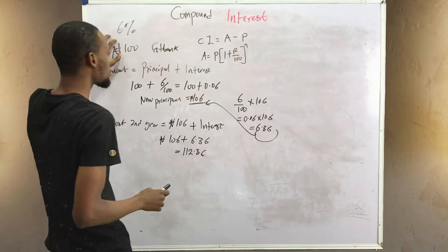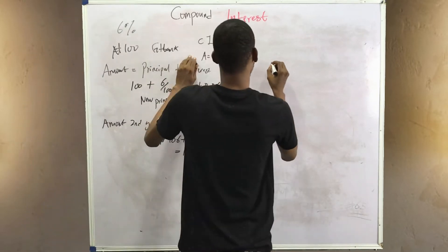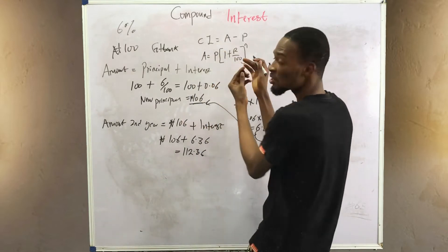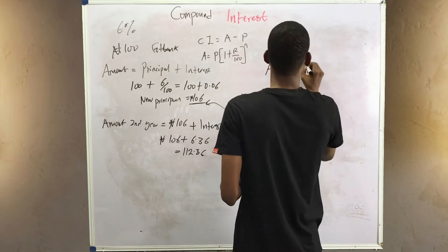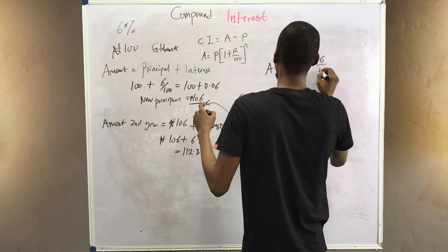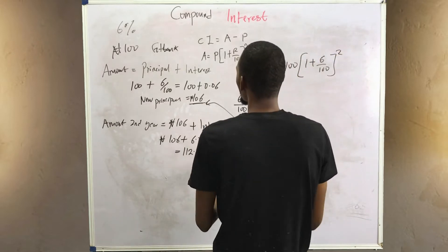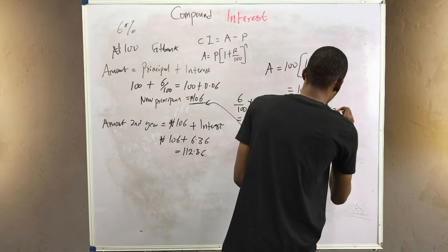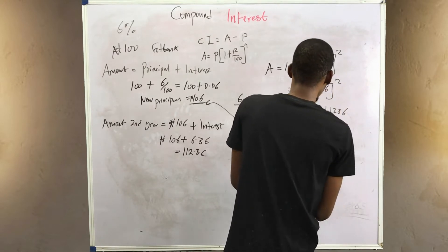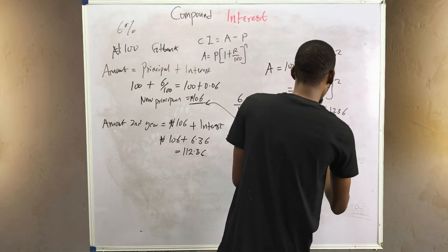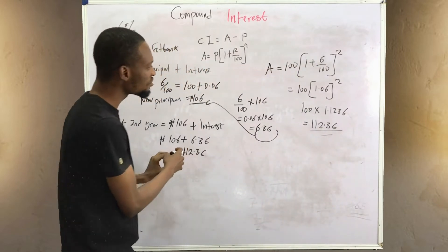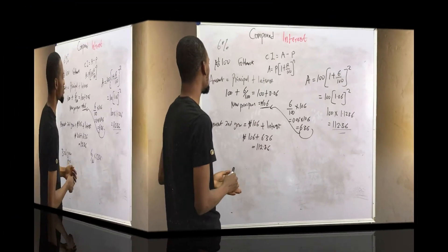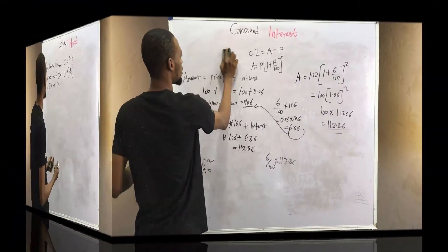If we're solving for the amount after two years on a 100 naira principal using the formula, the amount equals principal times bracket one plus r over 100, raised to the power n. So that's 100 times one plus six over 100, raised to power 2. This gives you 100 times 1.06 squared, which equals 112.36 — the same amount we got manually.